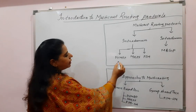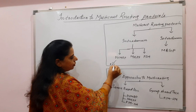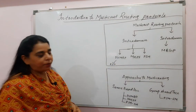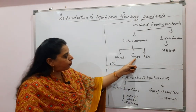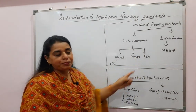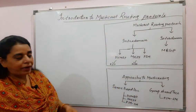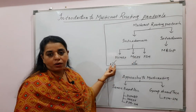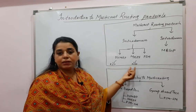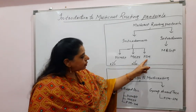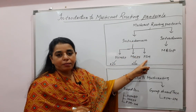The first intra-domain multicast protocol is the Distance Vector Multicast Routing Protocol (DVMRP), which is an extension of RIP from unicast routing. Then we have MOSPF — Multicast Open Shortest Path First — which is an extension of OSPF. The third protocol is PIM, Protocol Independent Multicast.